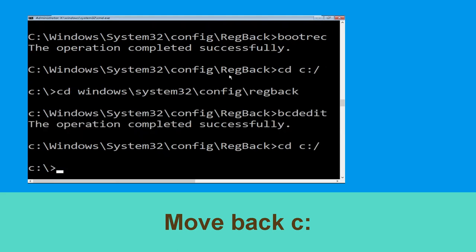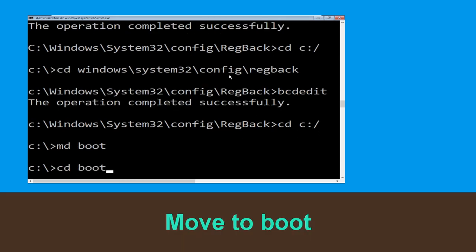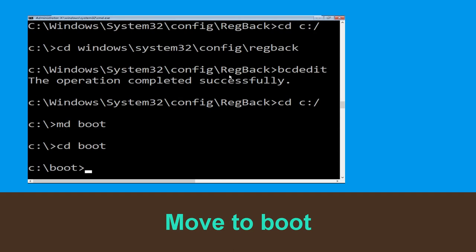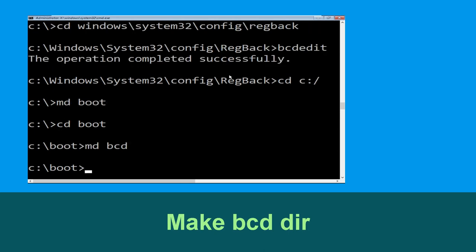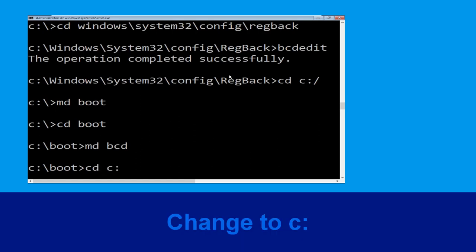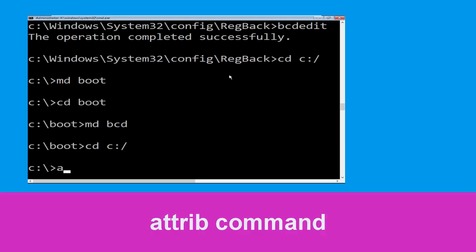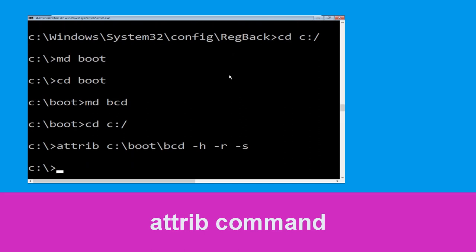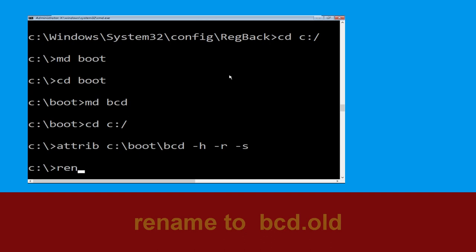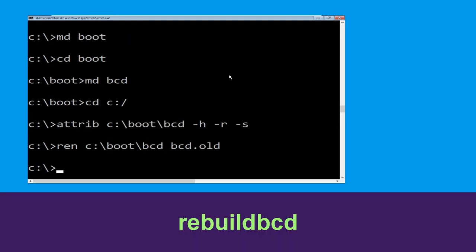Now type cd C:\ and hit Enter. Now type cd boot and hit Enter. Now type attrib C:\boot\BCD -h -r -s and hit Enter. Type ren C:\boot\BCD BCD.old and hit Enter to execute this command.